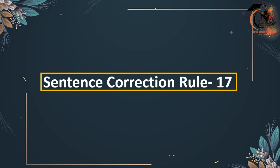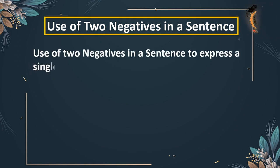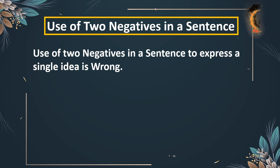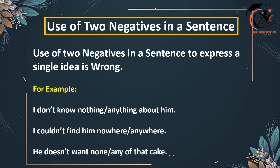Welcome to another sentence correction rule — Rule 17, which is about the use of two negatives in a sentence. It states that the use of two negatives in a sentence to express a single idea makes a sentence wrong or incorrect. So we cannot use two negatives in a single sentence to express a single idea.